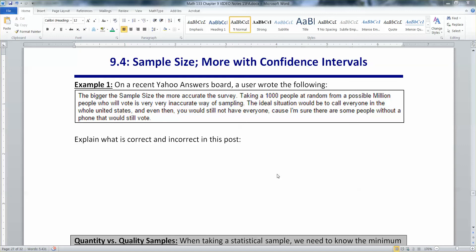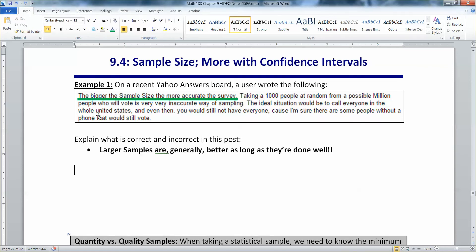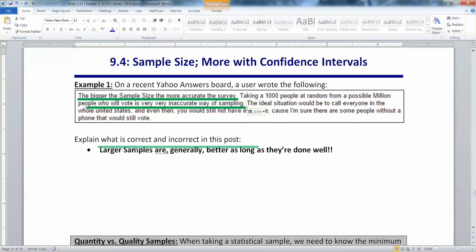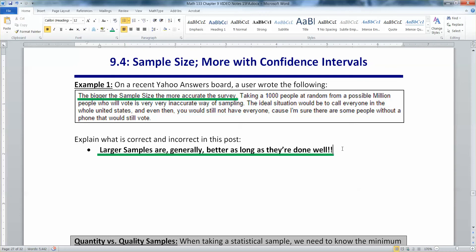In a way they're kind of right. The bigger the sample size, accurate is not quite the word to use but you want a larger sample size. So that first part became this line right here: larger sample sizes are generally better as long as they're done well, which is what we're about to talk about. But pretty much everything else is wrong.